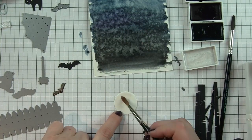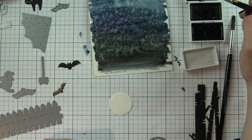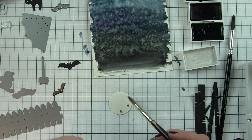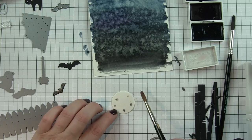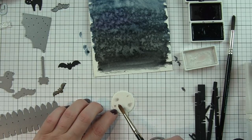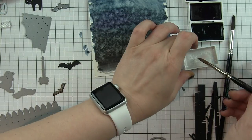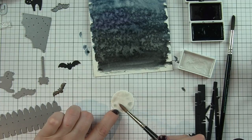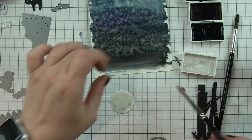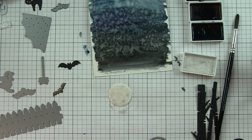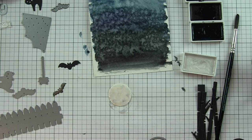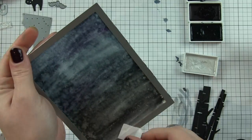I have die cut a moon using the Lawn Fawn Sun and Moon dies and I'm using the round moon not the crescent moon. I'm adding some of that sparkly silver color and then a little bit of black or blue just depending on what I'm picking up to give some texture to that moon but it's going to give it a nice sparkly finish.